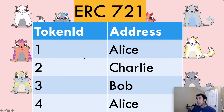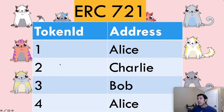ERC-721 is the standard for non-fungible tokens. For non-fungible tokens, all tokens are unique. Every token in an ERC-721 smart contract has a unique token ID. Therefore, to keep track of the owners of these tokens, we have this mapping. On the left side we have a token ID, and on the right side we have the owner or address that owns that token. Token ID 1 is owned by Alice, and token ID 2 is owned by Charlie.